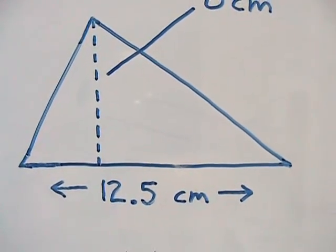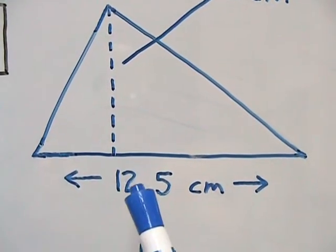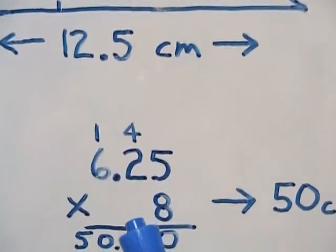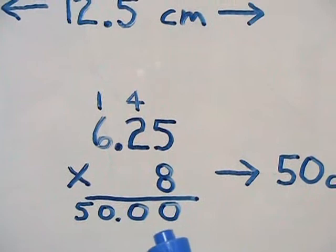So we're going to take half of the base, which is 6.25, multiply it by our height, which is 8, and this gives us 50.00.